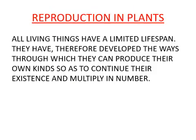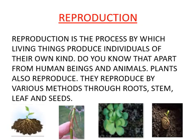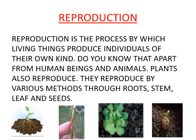Next is Reproduction in Plants. All living things have a limited lifespan. They have therefore developed ways through which they can produce their own kind, so as to continue their existence and multiply in numbers. Now the question arises: what is reproduction? Reproduction is the process by which living things produce individuals of their own kind. Do you know that apart from human beings and animals, plants also reproduce?